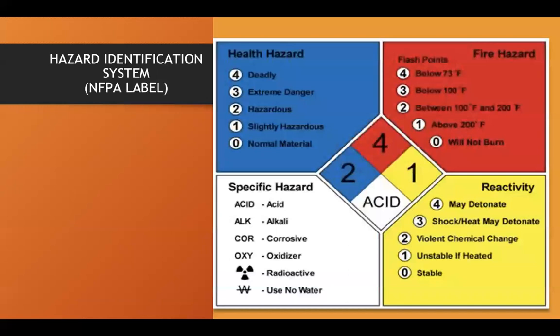The NFPA — National Fire Protection Association — hazard identification system uses a diamond label with four color sections: blue for health hazard, red for fire hazard, yellow for reactivity hazard, and white for specific hazards. Each section is rated 0 to 4 depending on the chemical.